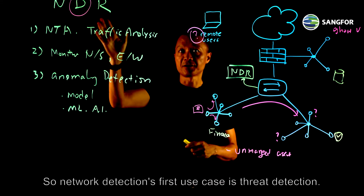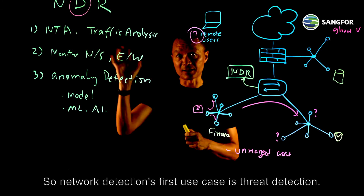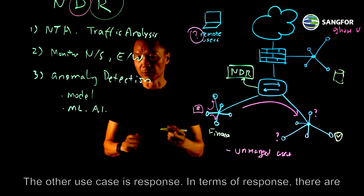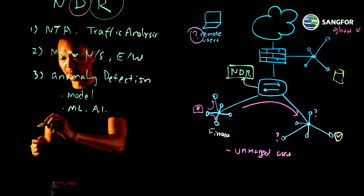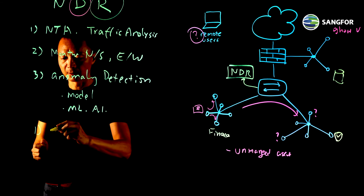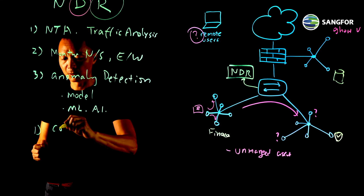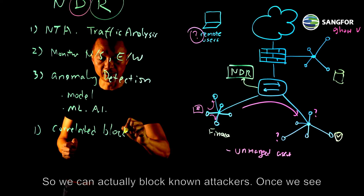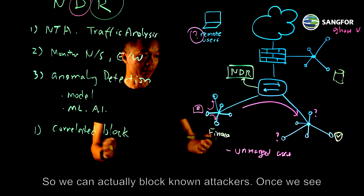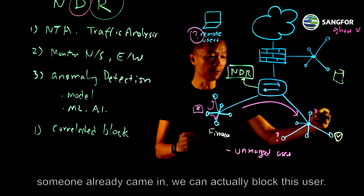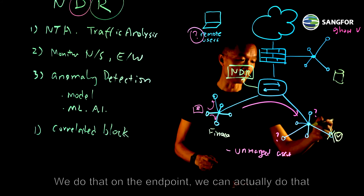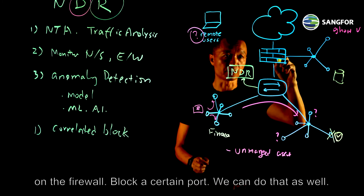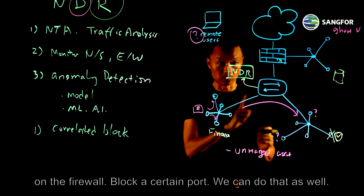Network detection's first use case is threat detection. The other use case is response. In terms of response, we can actually block known attackers. Once we see someone has already come in, we can block this user — we can do that on an endpoint, or we can do that on a firewall by blocking a certain port. That's the first part.